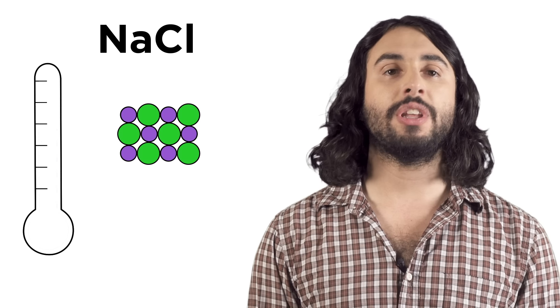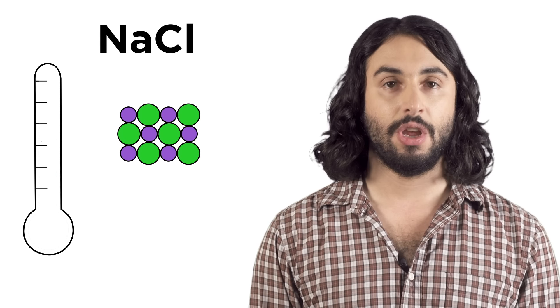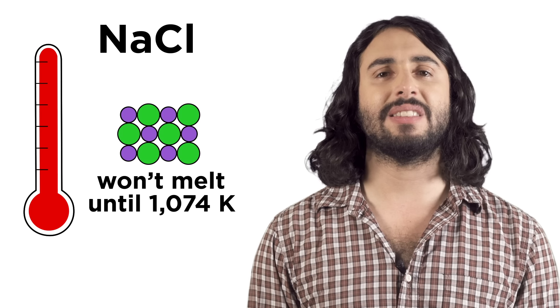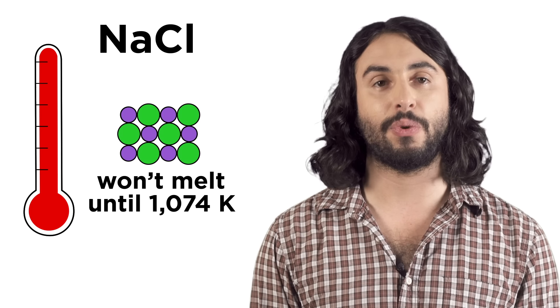Lastly, sodium chloride is making extremely strong ion-ion interactions, so it will take a huge amount of energy to melt and boil this solid. It melts at 1074 kelvin, which means there's a lot of energy stored in the ion-ion forces.